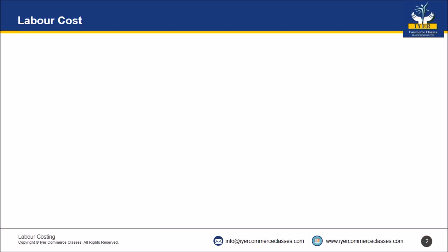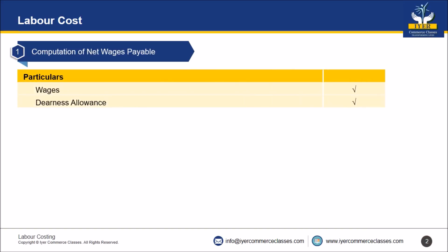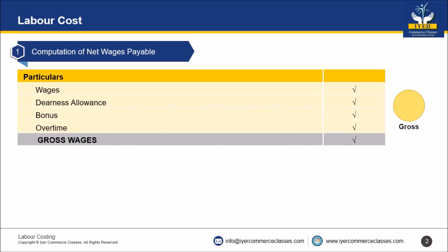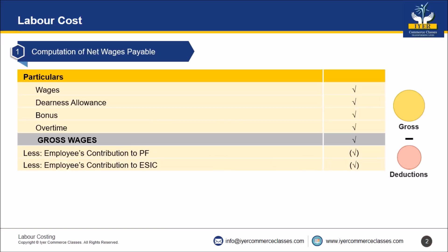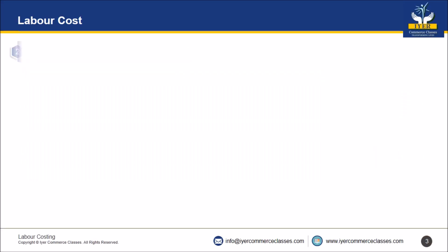Friends, let us start with labor cost. Three types of questions can be asked. Number one: computation of net wages. Start with wages, add dearness allowance, bonus, and overtime to get gross wages. Then apply deductions: less employees' contribution to Provident Fund, less employees' contribution to ESIC, less TDS and provision for tax. The final amount paid to employees is called net wages payment.